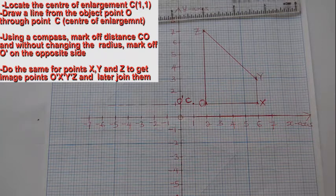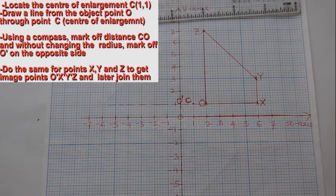The marked off point is image point O prime.